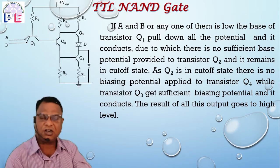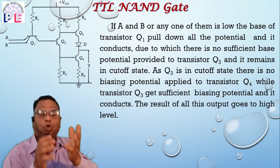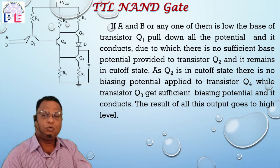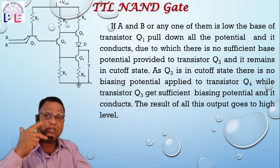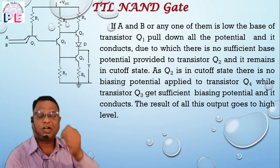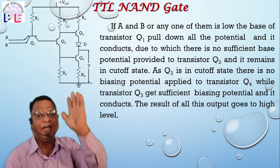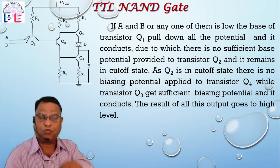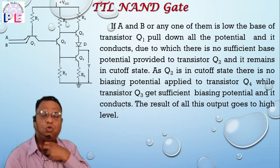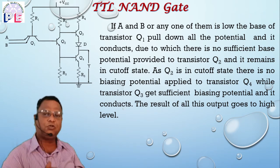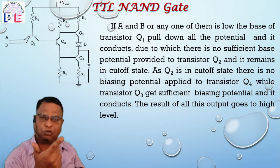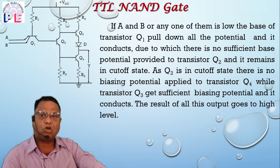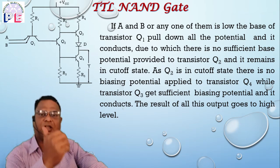While Q3 conducts and the upper transistor of totem pole mode is active, the output goes to a high level. We can conclude that when both inputs are low or any one input is low, transistor Q1 conducts, Q2 is OFF, Q3 conducts, Q4 is OFF, and the output of this circuit goes to high level. That is: 0-0 gives output 1, 0-1 gives output 1, and 1-0 also gives output 1.